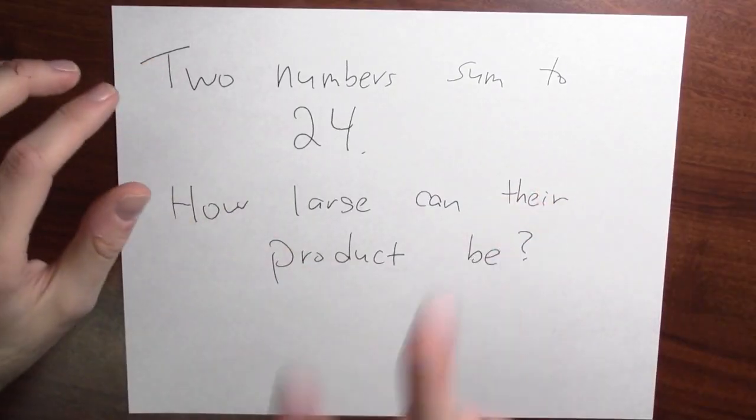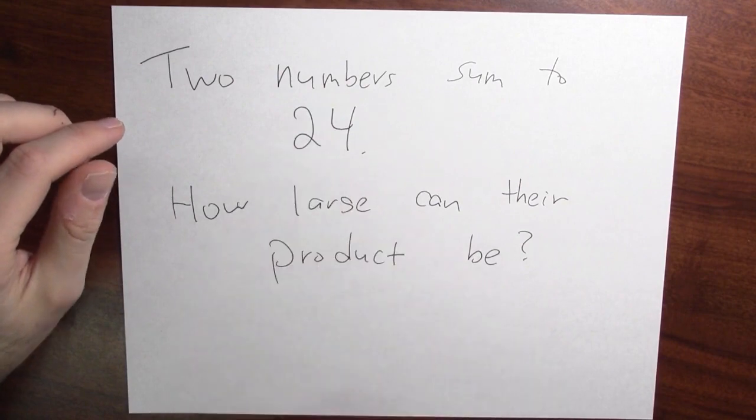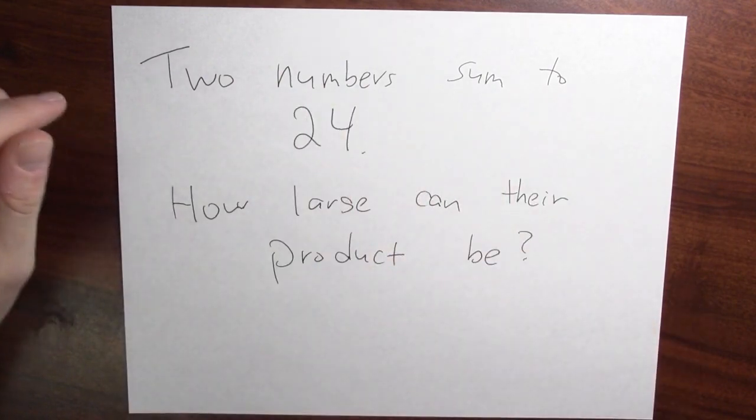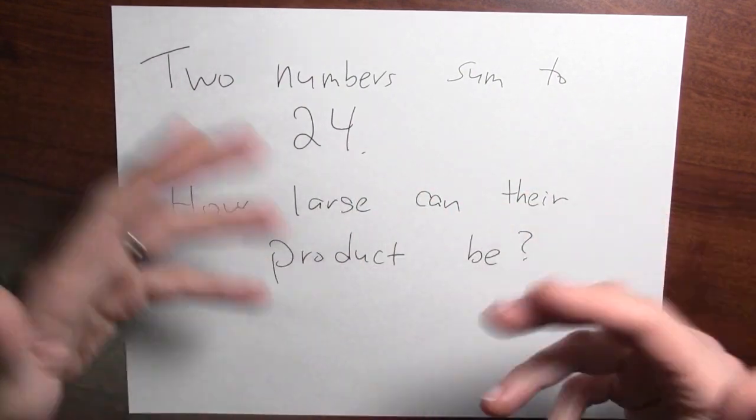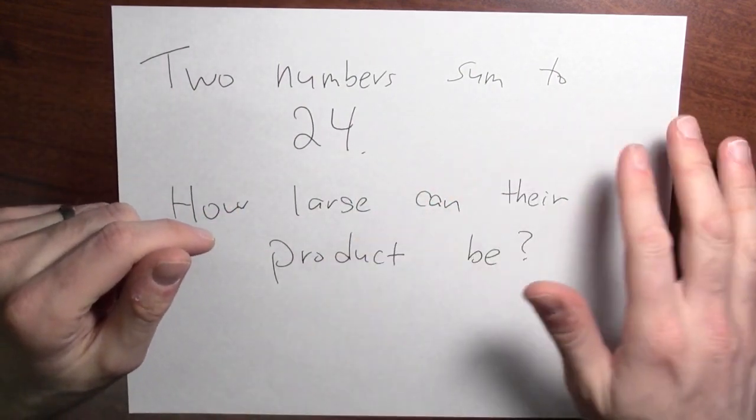Here's kind of an old timey puzzle about numbers. Suppose you've got two numbers which add up to 24. You've got two numbers that sum to 24. How large can their product be? When you take those two numbers that add up to 24, how big of a number can you get when you multiply them together?